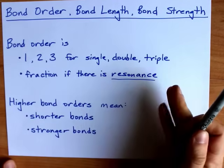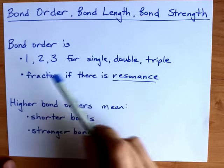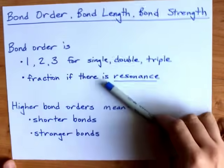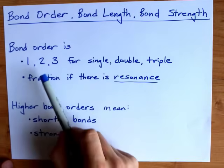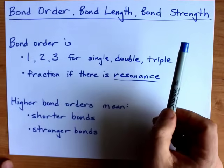Bond order gets a little more complicated if there's resonance, because then sometimes you have single bonds or double bonds in the same place and you'll end up with a fraction. I'll do some examples of that in just a second.